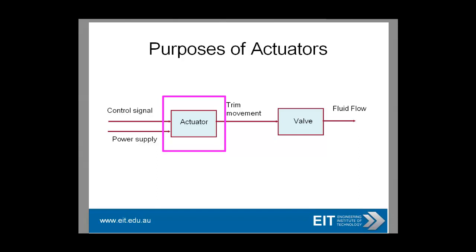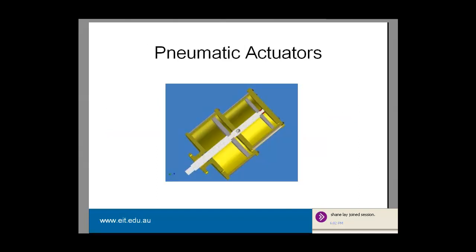Whether it be fail-open or fail-closed doesn't make a difference. So what is the purpose of the actuator? It's there to give us continuous valve operations. We might use it for sequential control; it makes operations a lot easier. If you're operating in hazardous areas, you would go for an actuator. If you want to reduce operating costs, you'll consider an actuator. And as we've said, there's the opportunity of a fail-safe position.